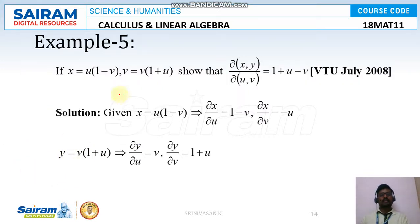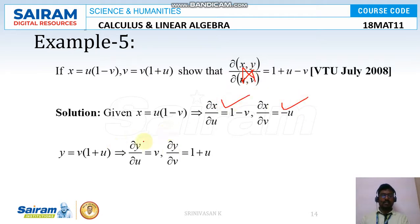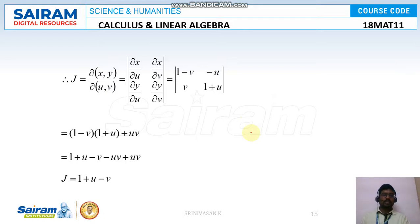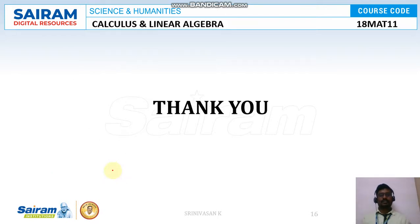Similarly for the next problem, we find xu, xv, yu, yv, substitute into the matrix, and perform cross multiplication. We get J = 1 + u − v.